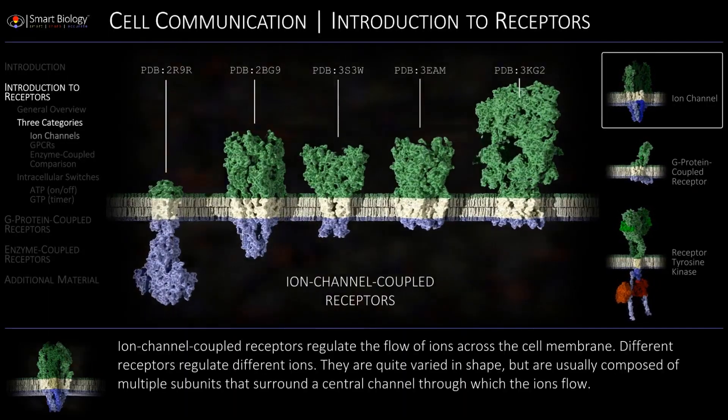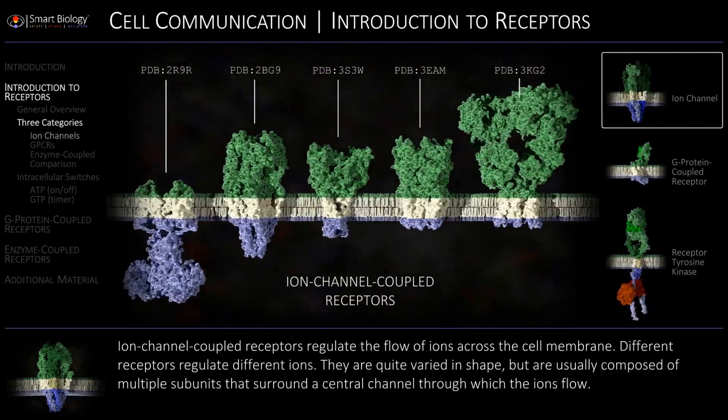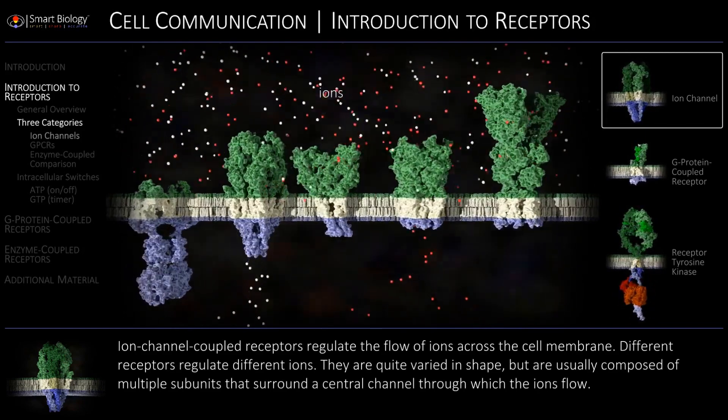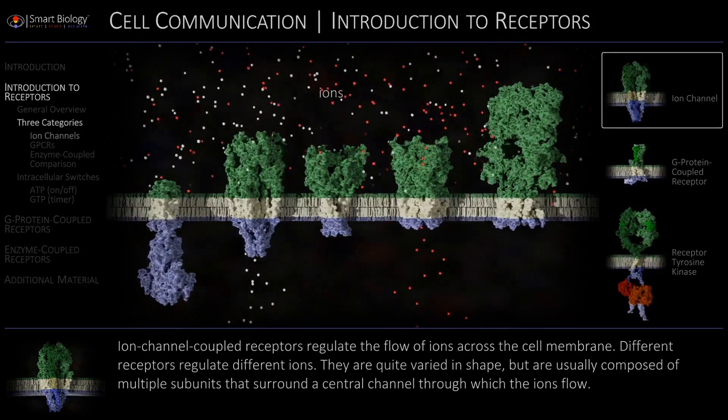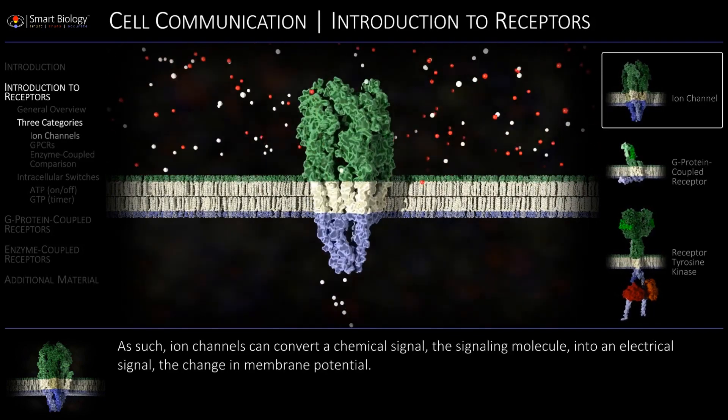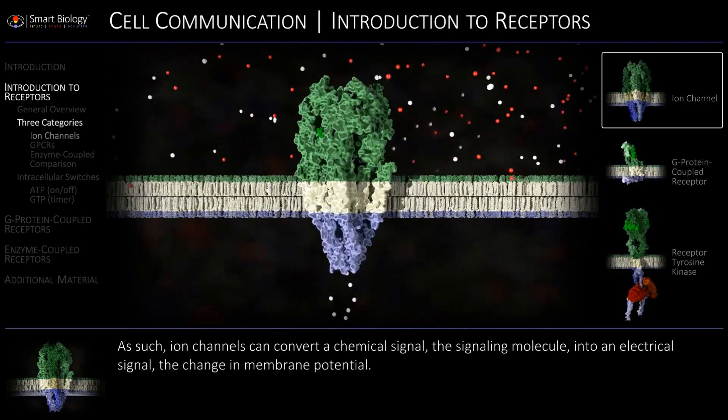Ion-channel coupled receptors regulate the flow of ions across the cell membrane, causing a change in membrane potential.